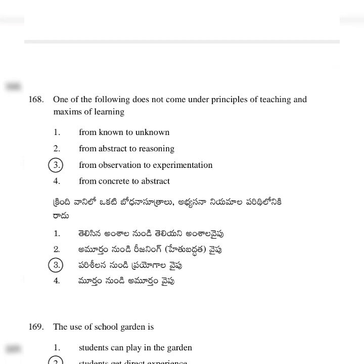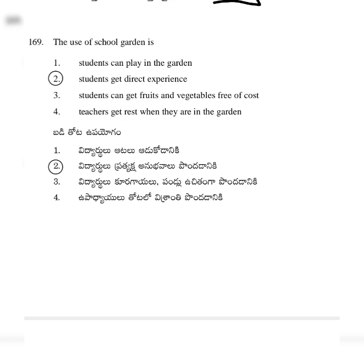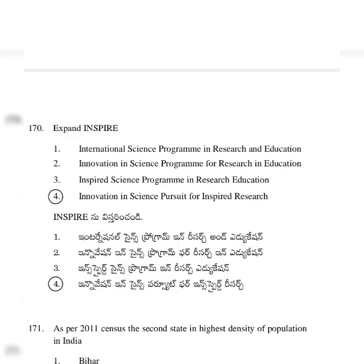One of the following does not come under principles of teaching and maxims of learning — option 3: from observation to experiment. The use of school garden — option 2: students have direct experiences.